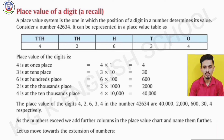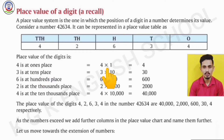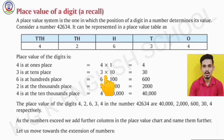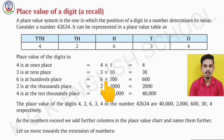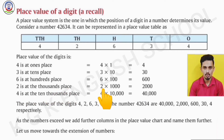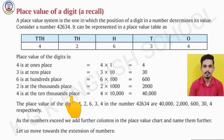From this we can see it is a 5-digit number. In a 5-digit number there are 5 places: ones, tens, hundreds, thousands, and ten-thousands. The place value of each digit is as follows: 4 is at the ones place, so 4 × 1 = 4. 3 is at the tens place, so 3 × 10 = 30. 6 is at the hundreds place, so 6 × 100 = 600. 2 is at the thousands place, so 2 × 1,000 = 2,000. 4 is at the ten-thousands place, so 4 × 10,000 = 40,000.